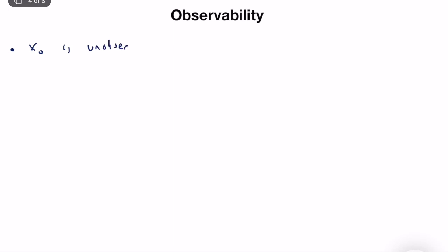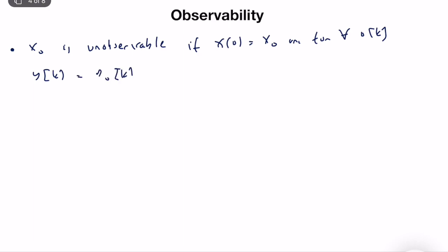For continuous time systems, x0 is unobservable if, when x equals x0 and for all possible u(k), y(k) is technically equal to y0(k) where x0 is equal to zero. So we apply the same input but now the initial condition is zero, and we obtain another y(k).